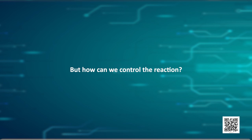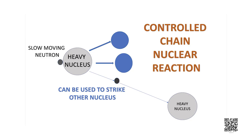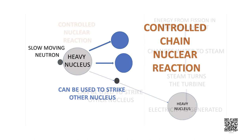But how can we control the reaction? After every fission reaction of one nucleus of uranium, three neutrons are produced. These three neutrons can cause fission of the next three uranium atoms. This process can continue as an uncontrolled chain reaction, or a self-sustaining reaction, in which the energy released can be devastating. If two of the three neutrons are removed so that only one neutron is left to carry out the next reaction with one more uranium atom, then this will be a controlled chain reaction.